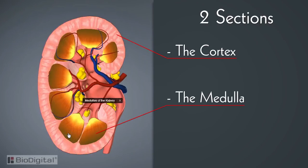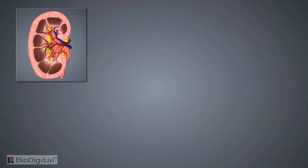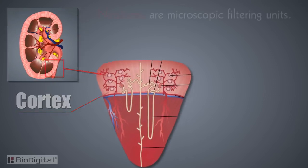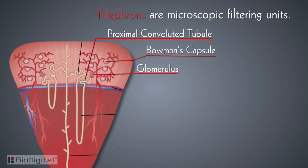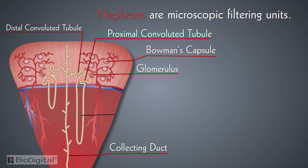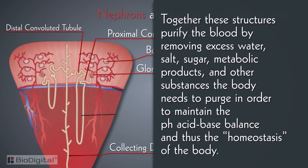Each kidney is divided into two main sections: the cortex and the medulla. The cortex is the outer section of the kidney and contains the majority of nephrons — microscopic filtering units. These filtering units are composed of a glomerulus, a Bowman's capsule, a proximal convoluted tubule, a distal convoluted tubule, and a collecting duct. Together, these structures purify the blood by removing excess water, salt, sugar, metabolic products, and other substances, in order to maintain the pH acid-base balance and thus the homeostasis of the body.